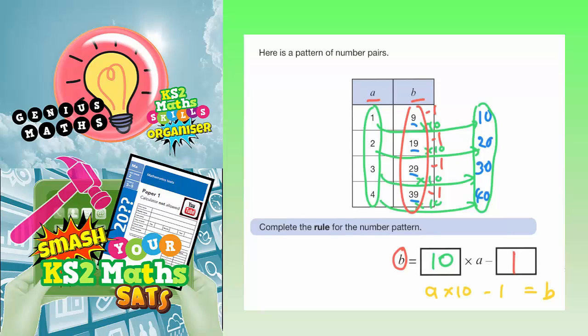So let's just double check. If you start with 1, 10 of those is 10, subtract 1 is 9. So that works. Start with 2, 10 of those is 20, take away 1 is 19. So that works.